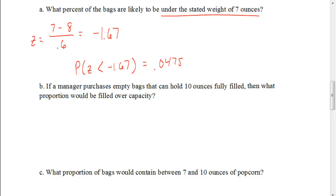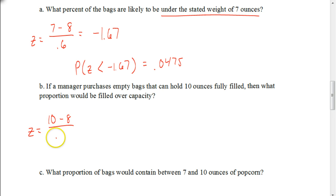Let's say I increase the size of the bag to one that would hold 10 ounces, but we're still going to fill it to be, on average, 8 ounces — to minimize the chance that it's going to get overfilled. To find my z-score, I'm going to take that 10 ounces, subtract the 8-ounce average, divided by 0.6. When you do that on your calculator, we get 3.33.